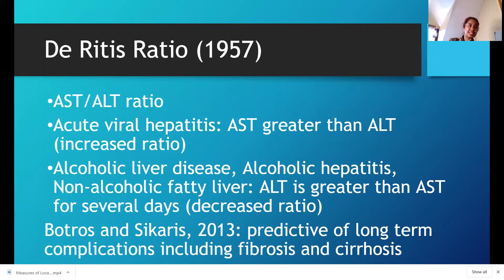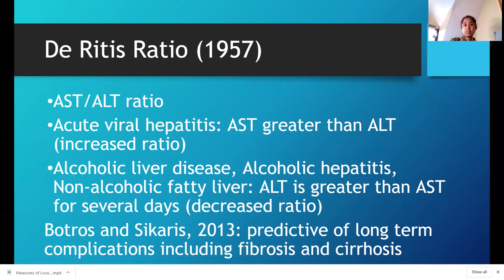Last but not the least is the De Ritis ratio. When we say the De Ritis ratio, it is the ratio between AST over ALT — you divide AST by ALT. This ratio has been around since 1957, making it about 63 years old.